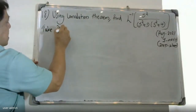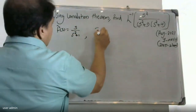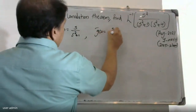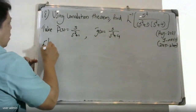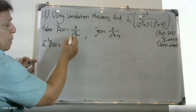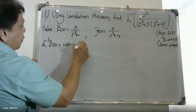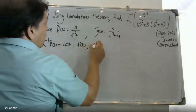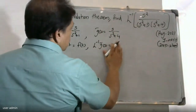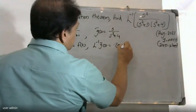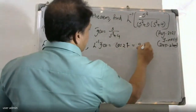We define F-bar equal to s by (s squared plus 1) and G-bar equal to s by (s squared plus 4). The inverse Laplace of F-bar, that is s by (s squared plus 1), equals cos t — so f(t) equals cos t. The inverse Laplace of G-bar, s by (s squared plus 4), equals cos 2t — so g(t) equals cos 2t.